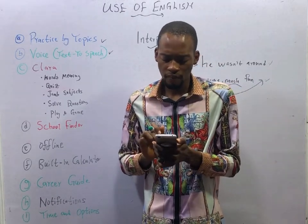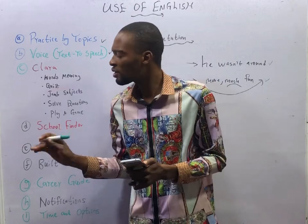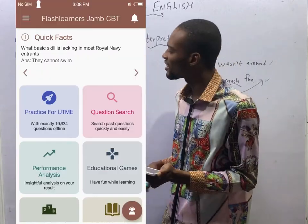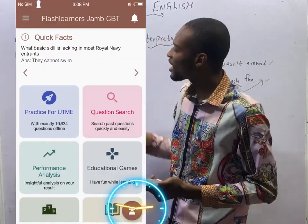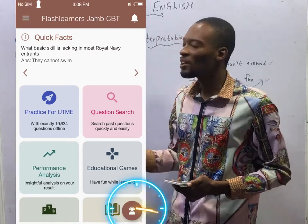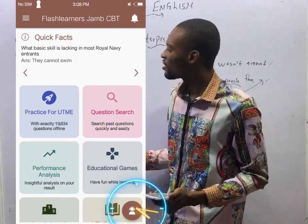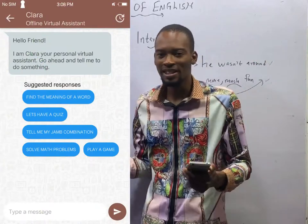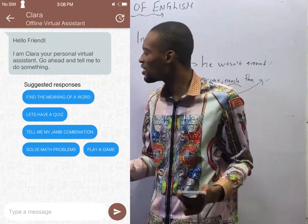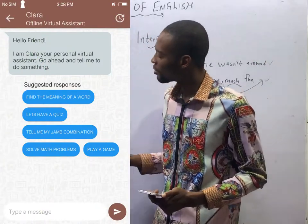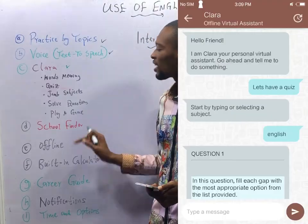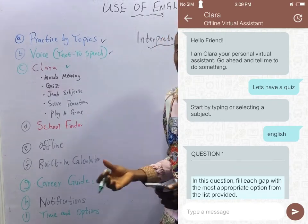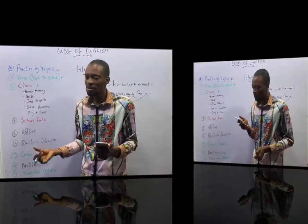One major feature of the Flash Nenas Jam app is Flash Nenas Clara — it is a chatbot. When you click on it, you can ask for meanings of words, take a quiz from any subject, and enjoy yourself. It can tell you your Jam subject combination. You can use Clara to solve problems, answer questions, and play games — you just say 'Clara, do this.'